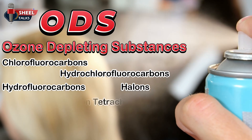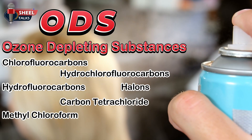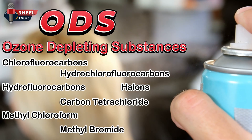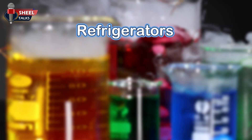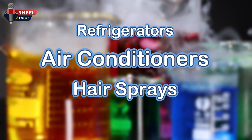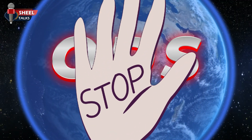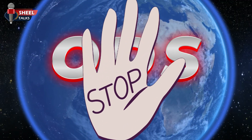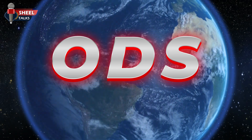Other ozone-depleting substances include halons, carbon tetrachloride, methyl chloroform, methyl bromide, and several other harmful chemicals. These substances were once commonly used in refrigerators, air conditioners, hair sprays, and foam products. However, their use has now been banned in many countries, since ODS are the main cause of ozone layer depletion.